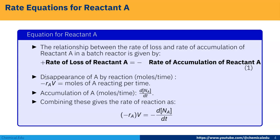Disappearance of A by reaction, that is moles per time, that is minus rA into V. So moles of A reacting per time. Accumulation of A, that is moles per time, is dNA/dt.